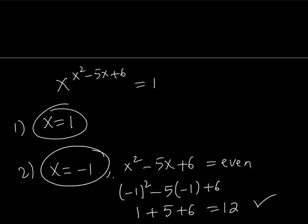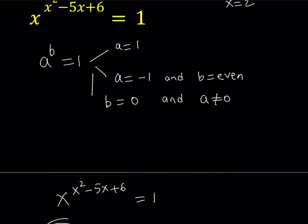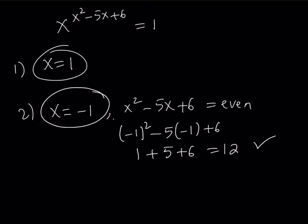So we are going to be looking at the third one. The third one involves the exponent being 0. So what does that give us? I want x squared minus 5x plus 6 to be 0, and I don't want x to be 0. Is that possible? Let's take a look.